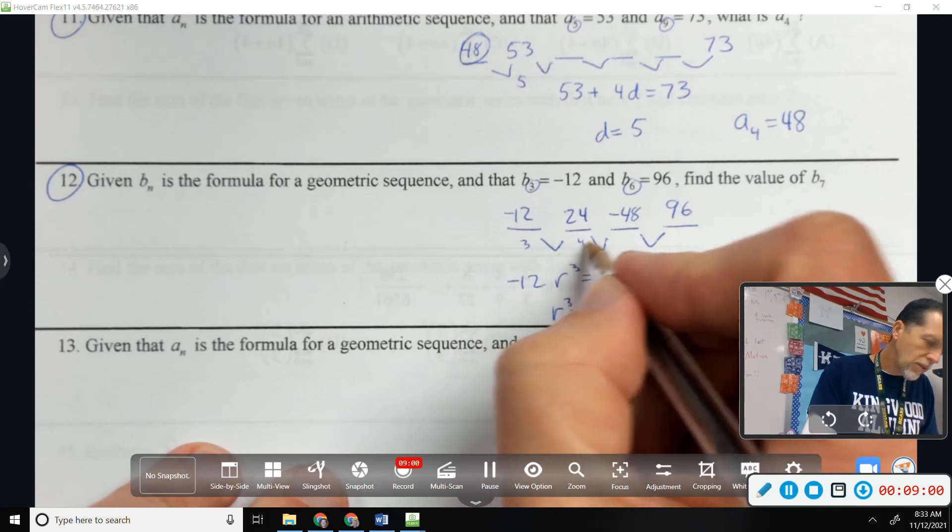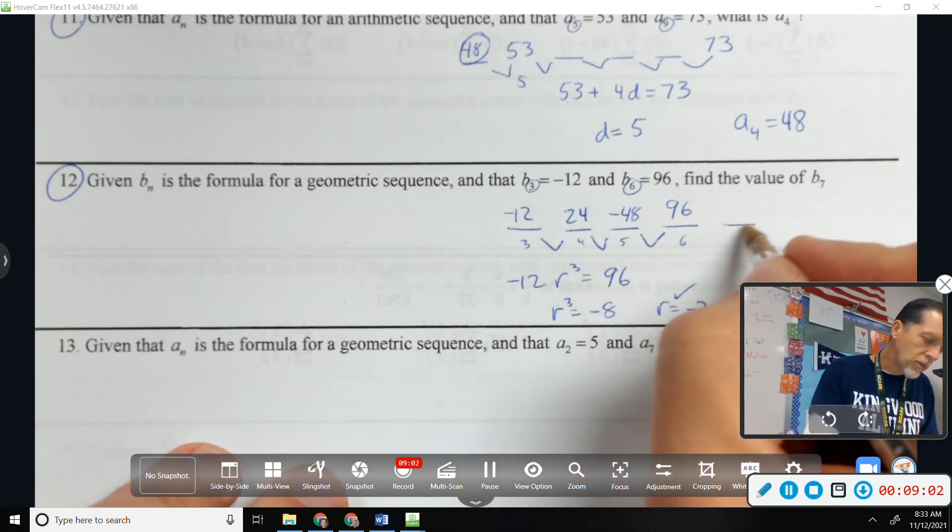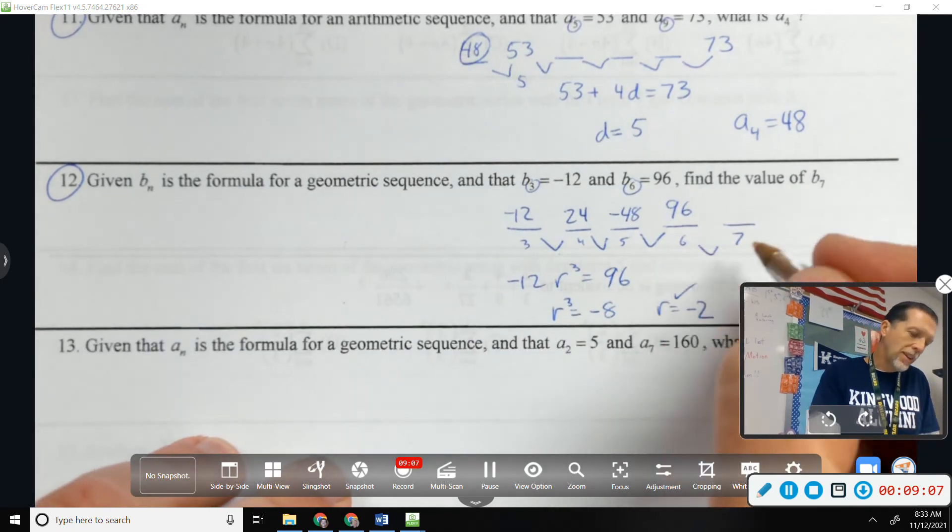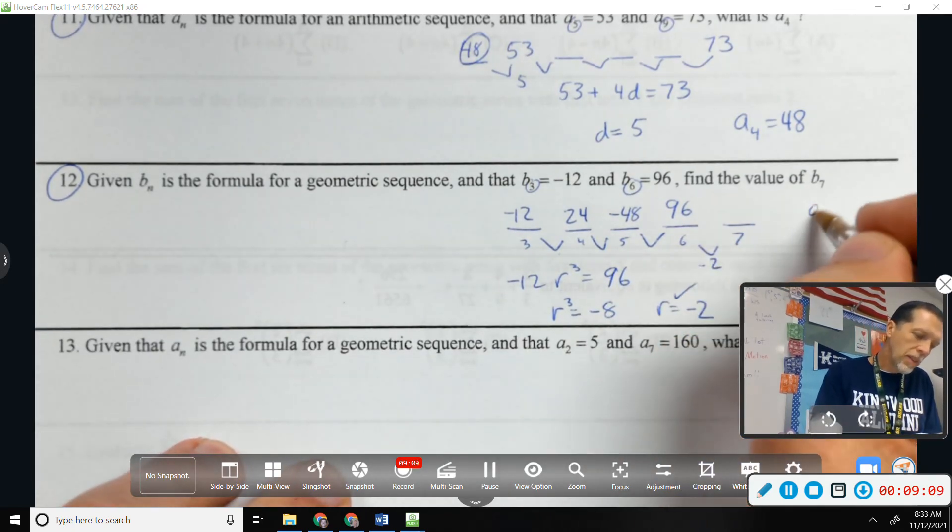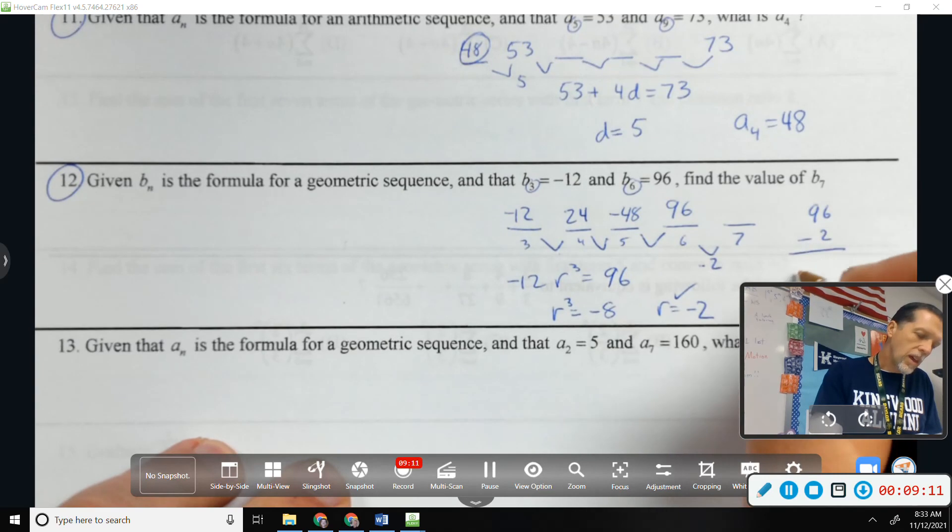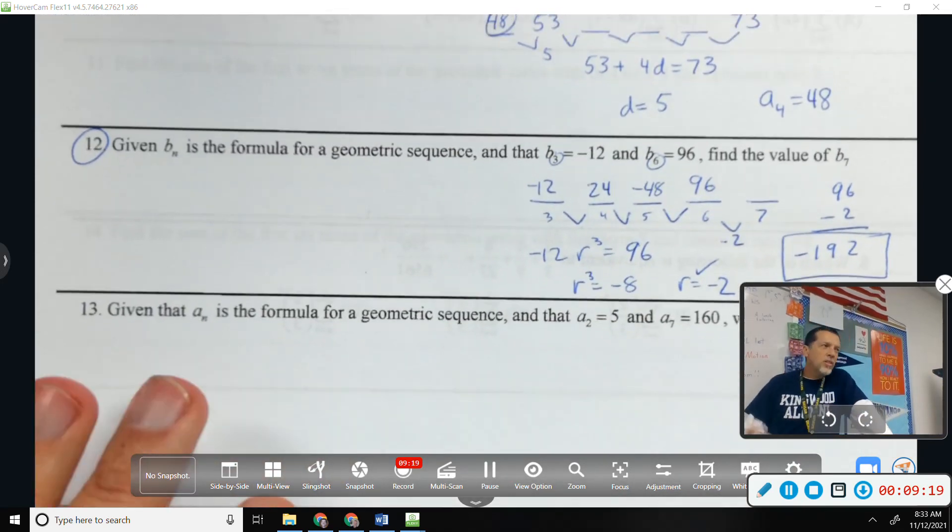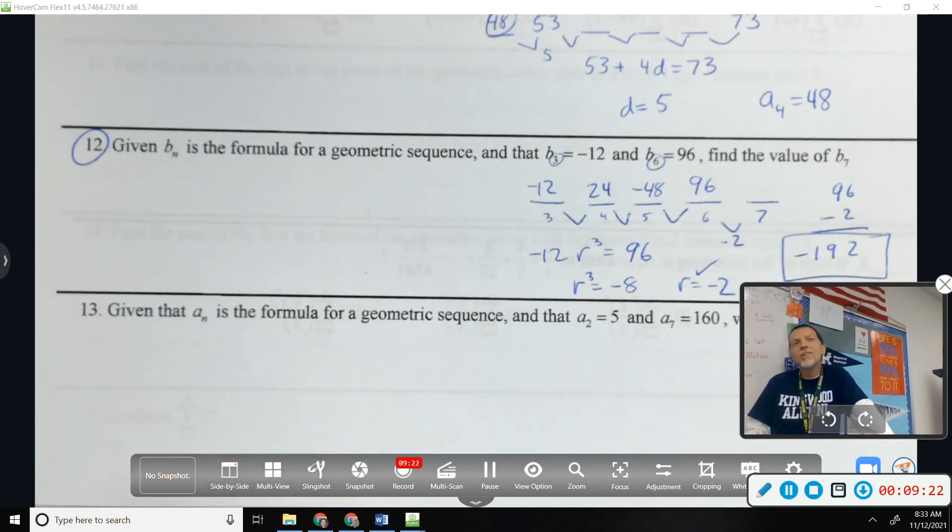Find the value of b_7. 3, 4, 5, 6. Oh, just one more. So again, I don't have to write the formula. I can just multiply by negative 2 one more time. That would be negative 192. So sometimes it's helpful to write the formula. Other times you can just kind of step your way forward or backwards until you find the term that you're looking for.